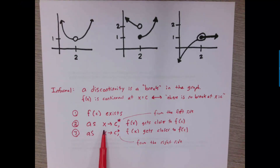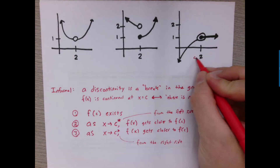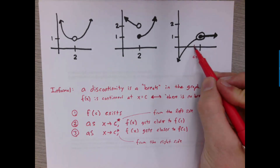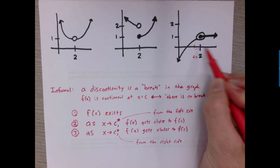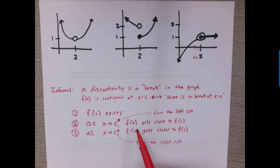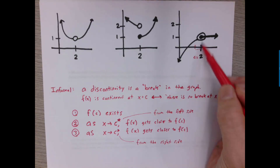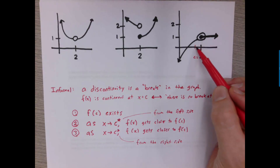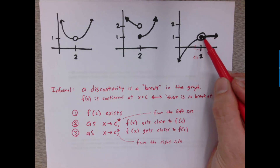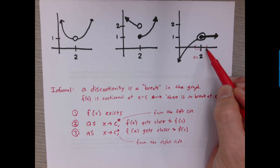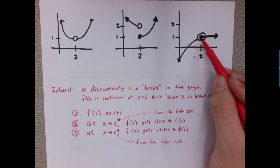As the x values approach the point we're interested in from the left side — so if I'm starting here and getting closer and closer to 2 — then the f of x values, that's the y values, are going to get closer and closer to the point that's defined for the function at x equals 2. As x gets closer to 2 on this side, the y values are approaching this point. And then the same thing has to be true on the other side: as the x values are getting closer to 2 from this side, the y values also have to be getting closer to this point.